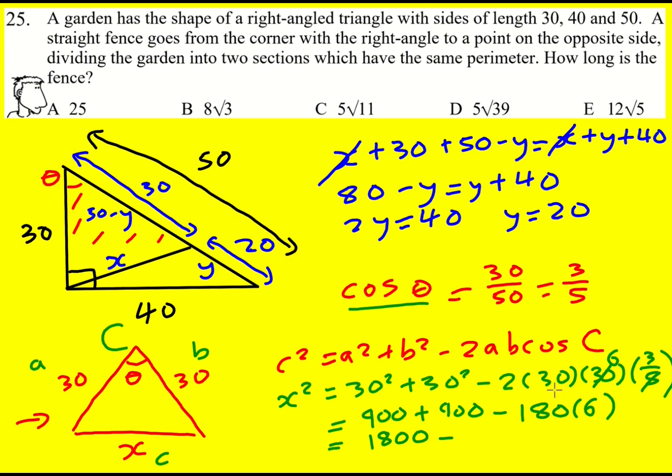So 1,800 minus, and then 180 times 6. If I times by 3 I get 540. If I double it I get 1080.